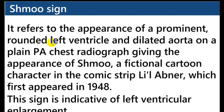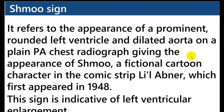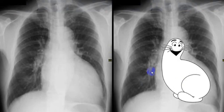The Schmoo sign: an appearance of the left ventricle and dilated aorta on a chest PA view resembling Schmoo — a cartoon character from the comic strip Li'l Abner. This sign is indicative of left ventricular enlargement. The dilated aorta gives rise to the head of the Schmoo, and the enlarged LV appears like the body. The aortic knob looks like the head, and the LV is the body part of the Schmoo character.